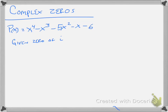Well, because there's a zero of i, that means that negative i is also a zero. So in order to factor it, I already have these two factors: x minus i and x plus i.